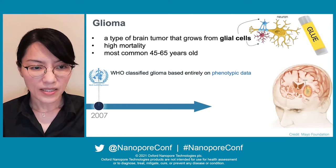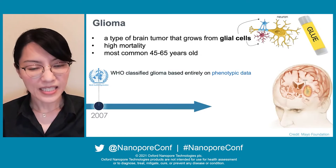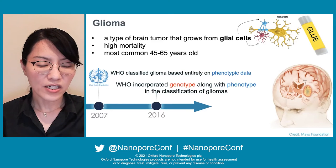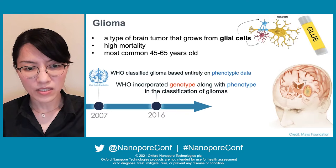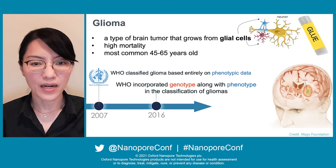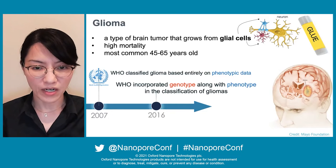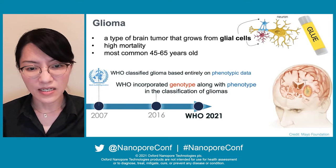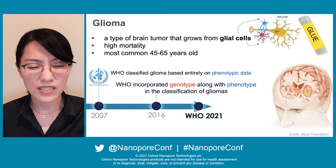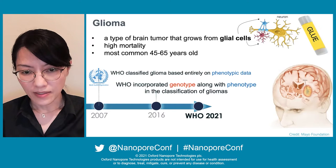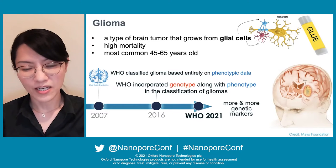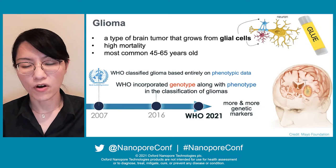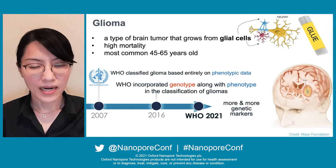In 2007, WHO classified glioma based entirely on phenotypic data. Then after 10 years, for the first time WHO incorporated genotype along with phenotype in the classification of glioma. And recently, WHO released the new updated version called WHO 2021, which includes more genetic markers, and next generation sequencing plays a greater role in glioma classification diagnosis.